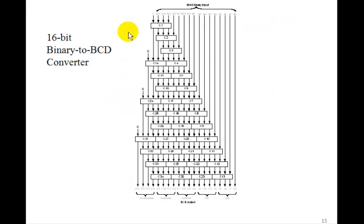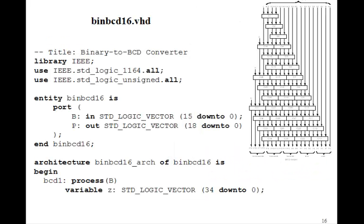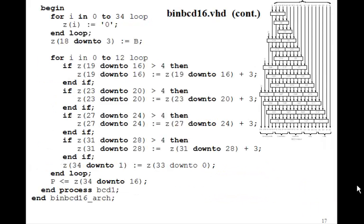Here's what a 16-bit binary to BCD converter would look like. You could put in FFFF here and get out up to 65,535 out. The B then would be 15 down to 0. If you drew the picture, you'd see that P would be 18 down to 0. Variable Z is now up to 34 down to 0. And now you, again, same algorithm, set all the Z's to 0. This goes 0 to 34. Shift B left 3 bits. It's now Z(18 down to 3) gets B.